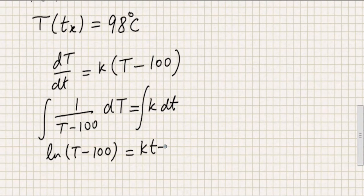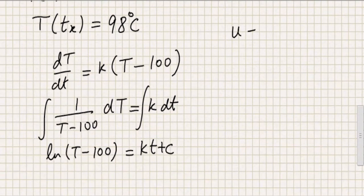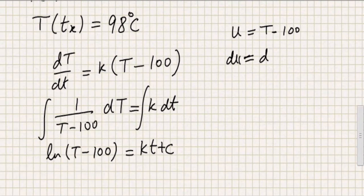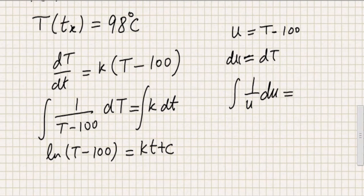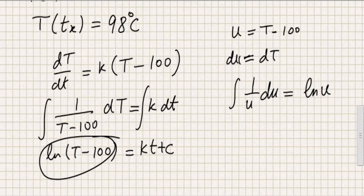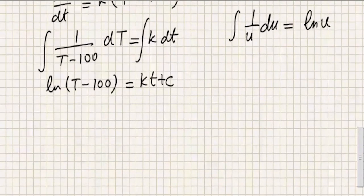Integrating both sides, I get the natural log of (T minus 100) equal to kt plus C. If you're confused about integrating (T minus 100), I'll explain: I assume u equals T minus 100, take the derivative on both sides and get du equal to dt. Translating in terms of u gives the integral of (1 over u) du, which equals the natural log of u, and replacing u gives natural log of (T minus 100).